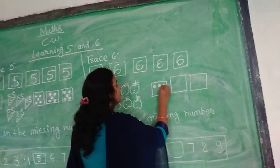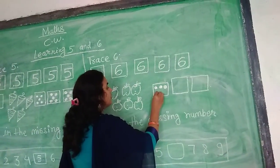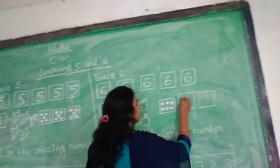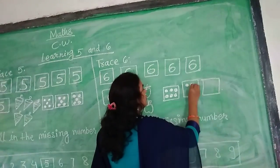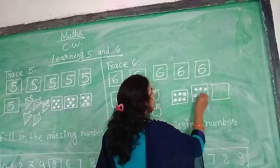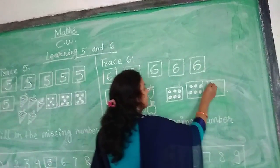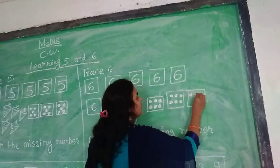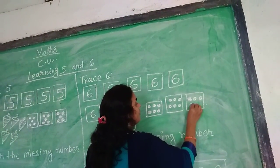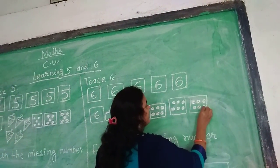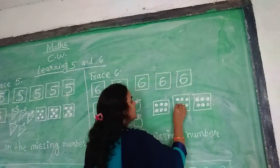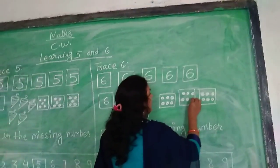Now we will tell you how to write 6 in dot pattern: 1 dot, 2 dot, 3 dot, 4 dot, 5 dot and 6 dot. Okay. Next: 1 dot, 2 dot, 3 dot, 4, 5 and 6. Again: 1, 2, 3, 4, 5 and 6.